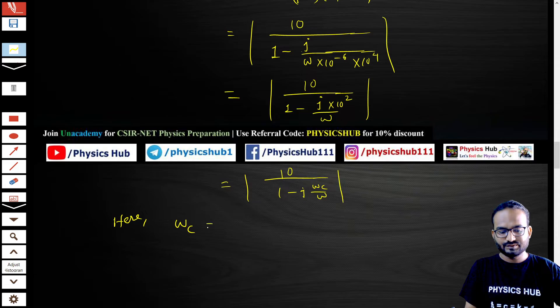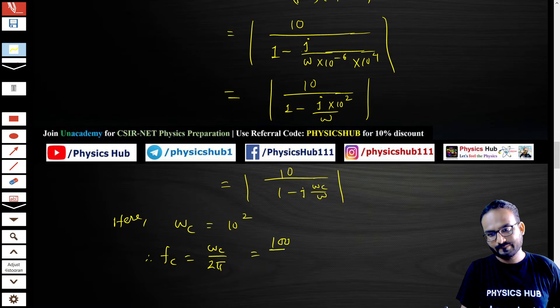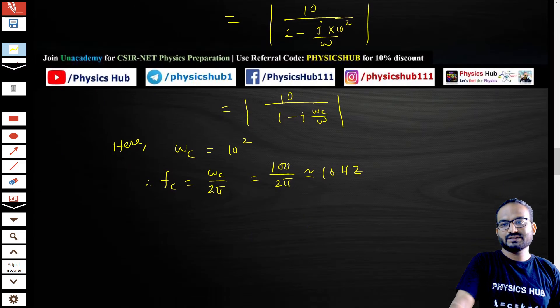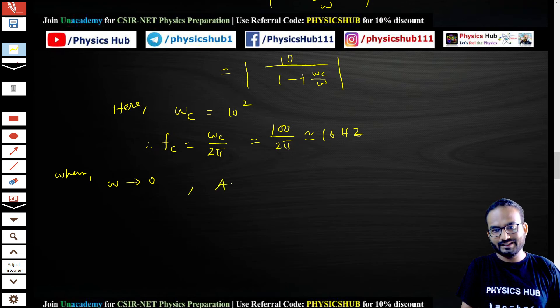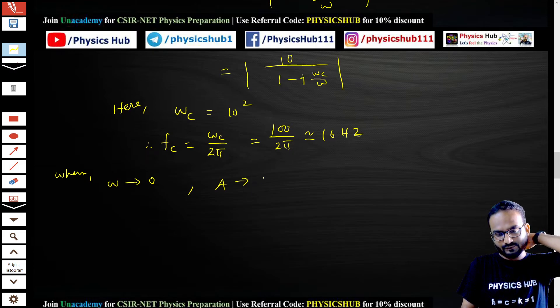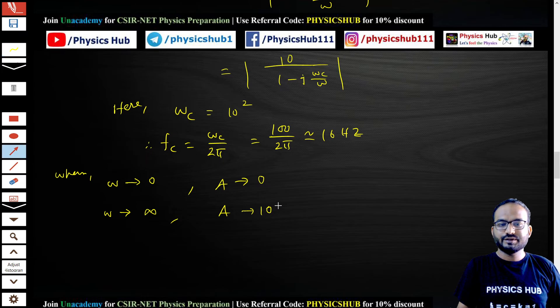What is omega_C here? Your omega_C is nothing but 10 to the power 2. This is the cutoff angular frequency. From here you can get the cutoff frequency by dividing it by 2 pi: 100 by 2 pi. This will come out to be approximately 16 hertz. Now let's consider the gain: when omega tends to 0, low frequency, we get A equals 0.